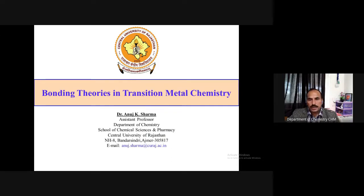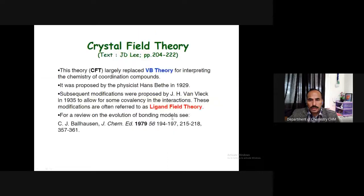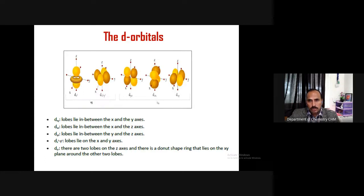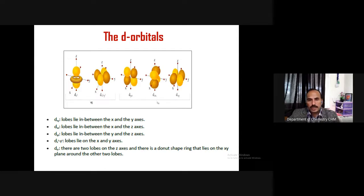I started explaining crystal field theory, which has now largely replaced the valence bond model because it is much more useful and much easier to understand and explain various properties of transition metal complexes. The very important part of crystal field theory is understanding how the d orbital splitting takes place in different geometries of the metal complexes. If you understand that, it will be very easy to explain the properties of transition metal complexes. With that in mind, you need to understand very well the shape of the d orbitals.